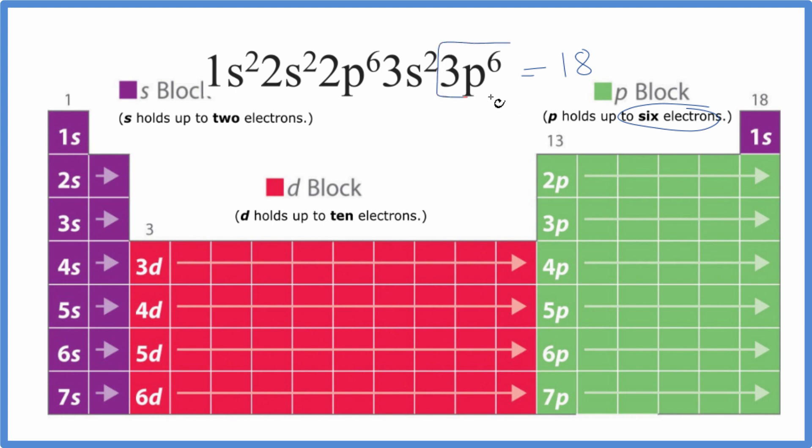In our configuration, we have 3p6. So we need to find that on the periodic table. So 1, 2, 3 across p1, 2, 3, 4, 5, 6. So this element here represents this electron configuration.